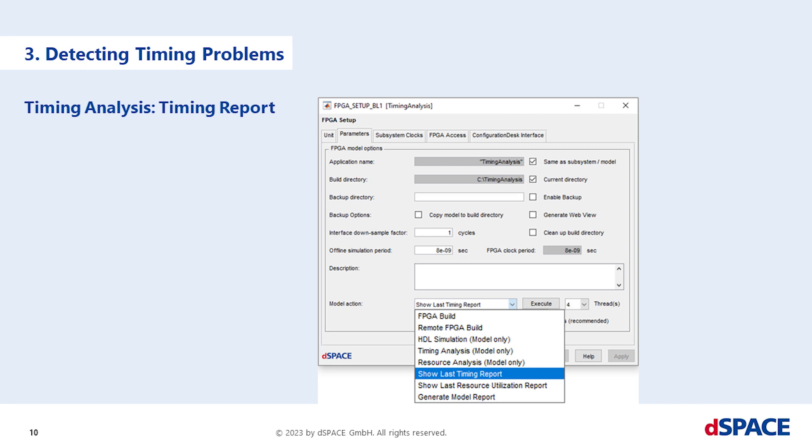Therefore, the FPGA build will abort in this case and the timing problems must be fixed. If the build process detects timing problems, you have to analyze and fix the timing problems of your FPGA subsystem.